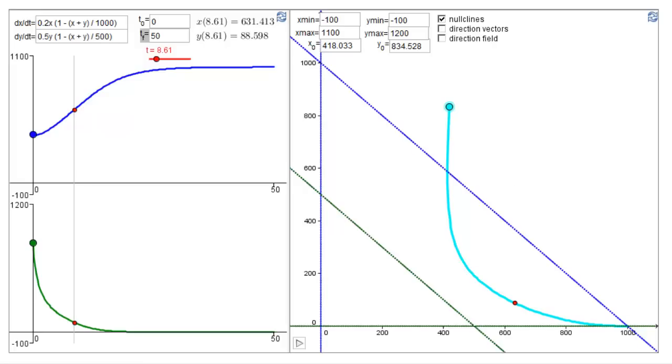Nullclines are a valuable tool, not just for determining equilibria, but also for getting a picture of how trajectories move in the phase plane. We'll use nullclines extensively when trying to understand the behavior of a system of two autonomous differential equations.